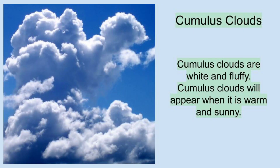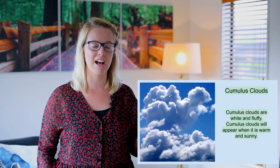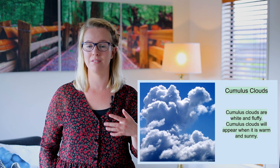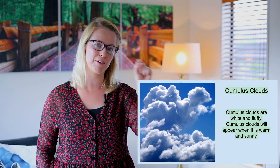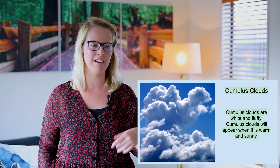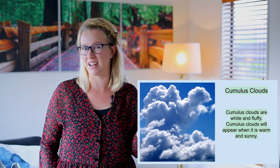The first type of cloud is called a cumulus cloud. Cumulus clouds are white and fluffy. Cumulus clouds will appear when it is warm and sunny. These are probably the clouds that you draw most often if you're drawing them on a piece of paper. I know they're the ones that I draw.